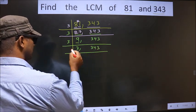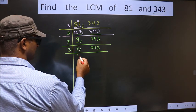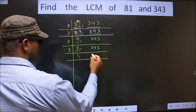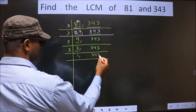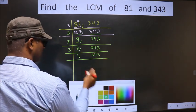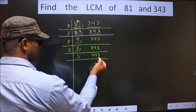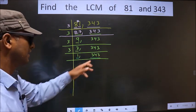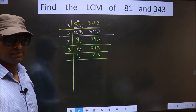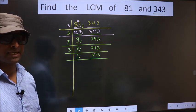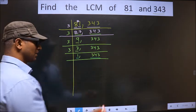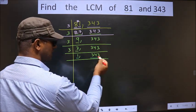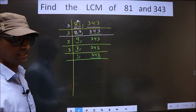Here we have 3. 3 is a prime number, so we take 3 once — 3 ones 3. 343 is not divisible by 3, so we write it down as it is. Now here we got 1. So we focus on to the next number, that is 343. This number is not divisible by 3. Next prime number is 5. The last digit is neither 0 nor 5, so this number is not divisible by 5.